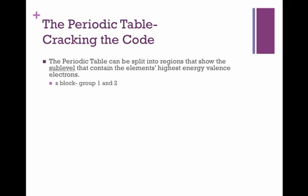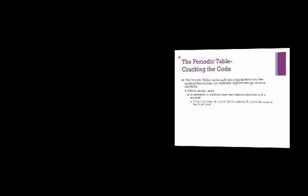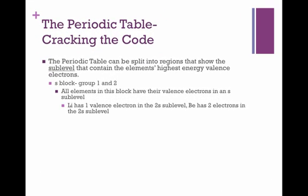The s block is where you would find groups 1 and 2. This is because all elements in this block have their valence electrons in an s sublevel. For example, lithium has one valence electron in the 2s sublevel, and beryllium has two electrons in the 2s sublevel.